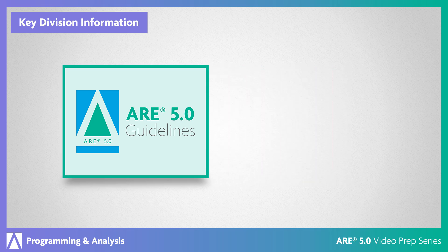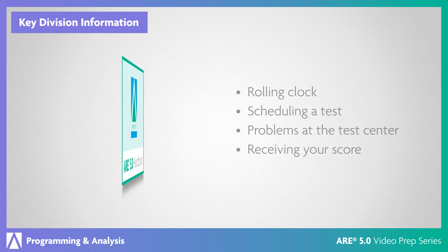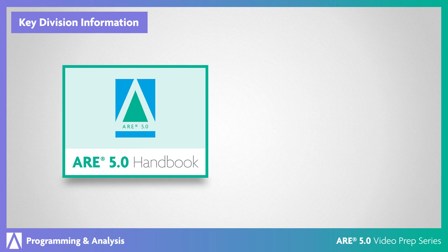The guidelines contain critical information about ARE 5.0 policies, including the rolling clock, scheduling a test, problems at the test center, and receiving your score. The handbook discusses the content of all six divisions and includes sample items and suggested references, as well as more information on the objectives for each division.